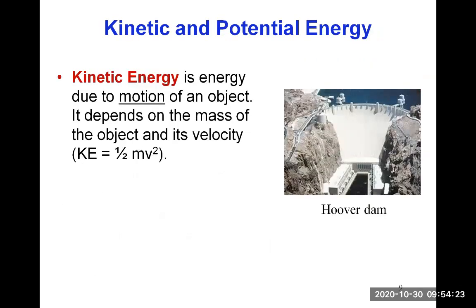There are two types of energy: kinetic and potential energy. Kinetic energy is energy due to the motion of an object. It depends on the mass of the object and its velocity. The formula for kinetic energy is one-half times the mass of the object times the velocity squared (KE = ½mv²). As soon as your object has motion and a velocity value, it possesses kinetic energy. If it doesn't move, the kinetic energy will be due to the vibrations of the molecules within the substance, because matter is always in motion when it has a temperature above absolute zero.